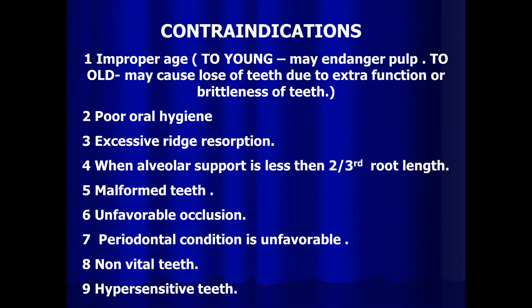Contraindications: the preparation may endanger the pulp, or in elderly patients may cause loss of teeth due to functional stress. Poor oral hygiene is a contraindication. Excessive ridge reduction when alveolar support is less than two-thirds root length. The ideal crown-root ratio is 1:1.5, and the minimum acceptable is 1:1 — a 50/50 percent ratio. Malformed teeth, unfavorable occlusions such as deep bite, crossbite, Class 2 or Class 3, and unfavorable periodontal conditions are also contraindications. Non-vital teeth, teeth with fractures, and hypersensitive teeth are contraindicated.